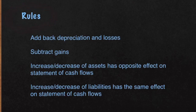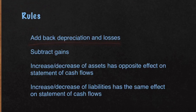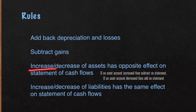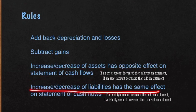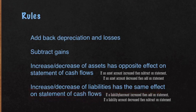Now there are some rules. When there's depreciation and losses, you want to add that back to the total. You're going to subtract gains. If there's an increase or decrease of assets, it has the opposite effect on the Statement of Cash Flows — meaning if an account increased, you're going to decrease it from the total, or vice versa. Next, if there's an increase or decrease of liabilities, it has the same effect on the Statement of Cash Flows — meaning if an amount increased, you're going to add it back to the total, and vice versa. It'll make more sense when we go through the example for McDowell's Corporation.